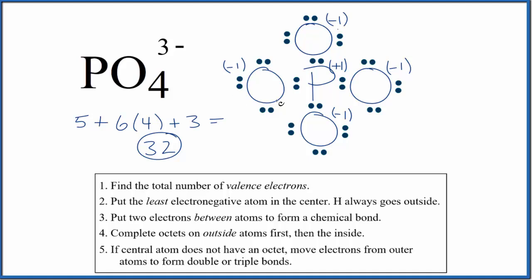we find that each oxygen with a single bond has a negative one formal charge, and the phosphorus in the center has a positive one formal charge. We'd like to have the formal charges as close to zero as possible.